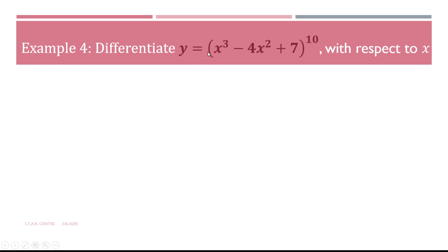Example 4: differentiate y equals (x³ minus 4x² plus 7) all to the power of 10, with respect to x. This particular function is not of the form ax plus b to the power of n, so there is no shortcut rule available. We have to use the full chain rule.